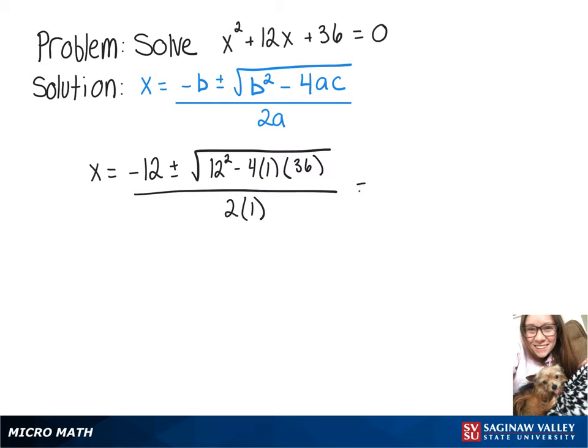That will turn into negative 12 plus or minus, we end up getting 0 inside the square root, so plus or minus the square root of 0 over 2.